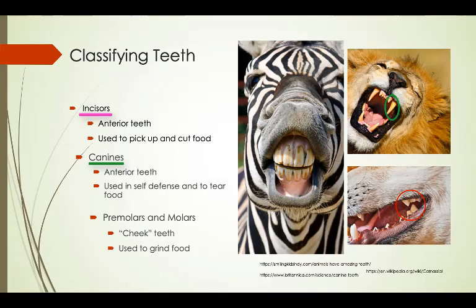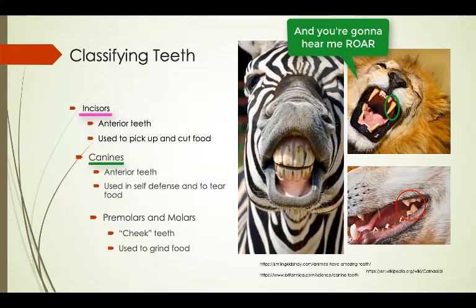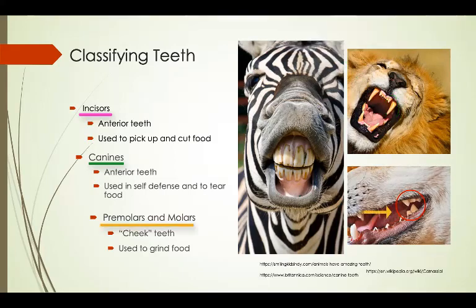Canines are also located in the anterior of the mouth and are used in self-defense and to tear up food. Premolars and molars are located in the posterior of the mouth and are referred to as cheek teeth, and their main function is to grind food into smaller pieces.